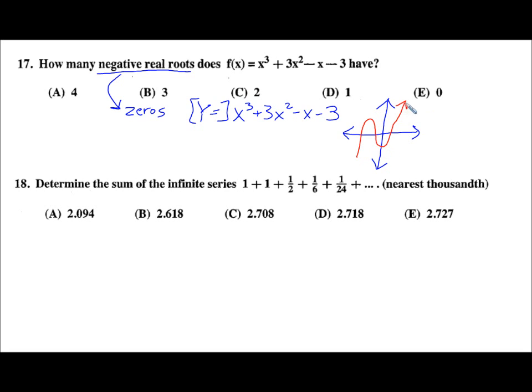We know that cubic functions must have exactly three zeros, three roots, because of the Fundamental Theorem of Algebra. It's asking how many negative real roots, so we want to know which of those roots are negative numbers. Those would have to be to the left of the origin. So these two are the negative real roots. There are two. 17 is C.